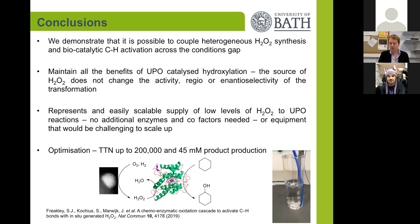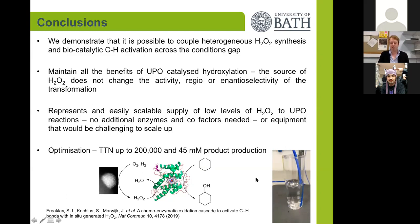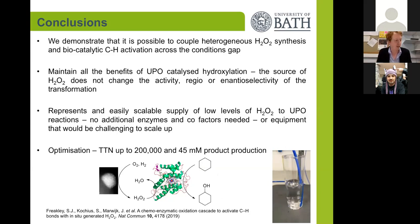This represents a really easy and scalable supply of low levels of hydrogen peroxide. Compared to the conditions usually used to oxidize cyclohexane, one of our cyclohexane reactions uses just a few milligrams of powder catalyst, some enzyme, some substrate, and we just bubble in hydrogen and oxygen to produce cyclohexanol.